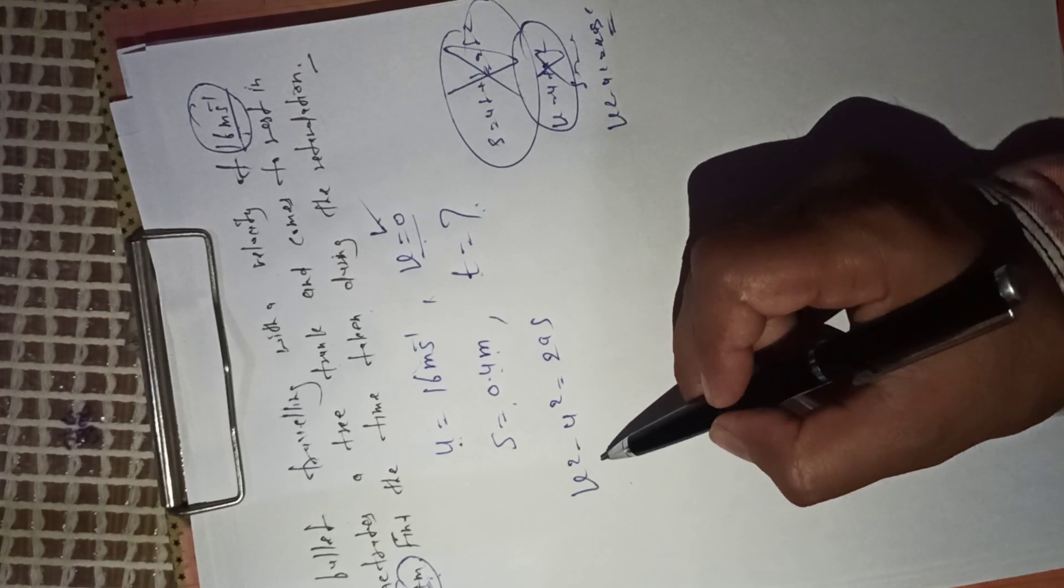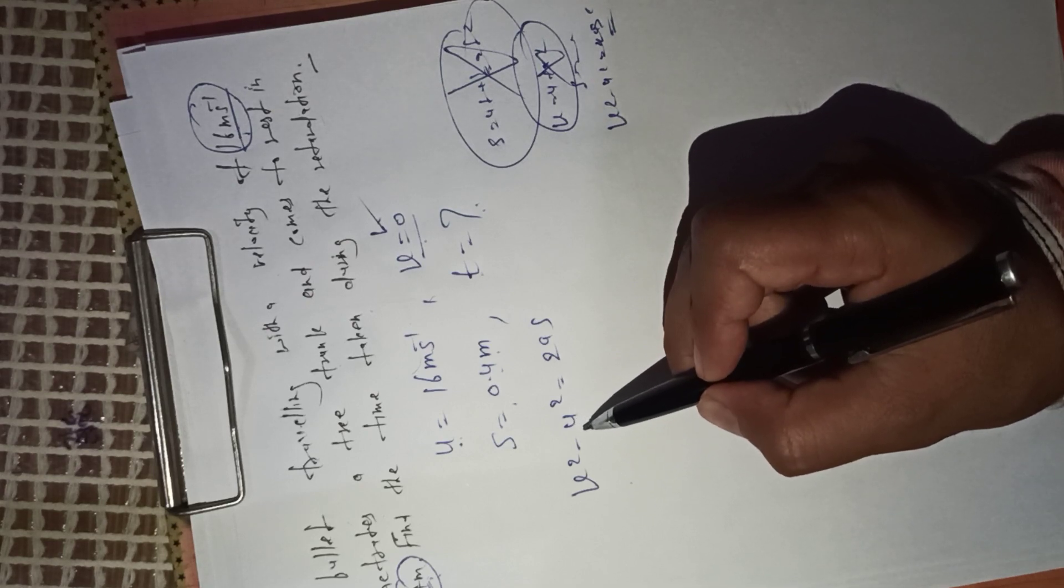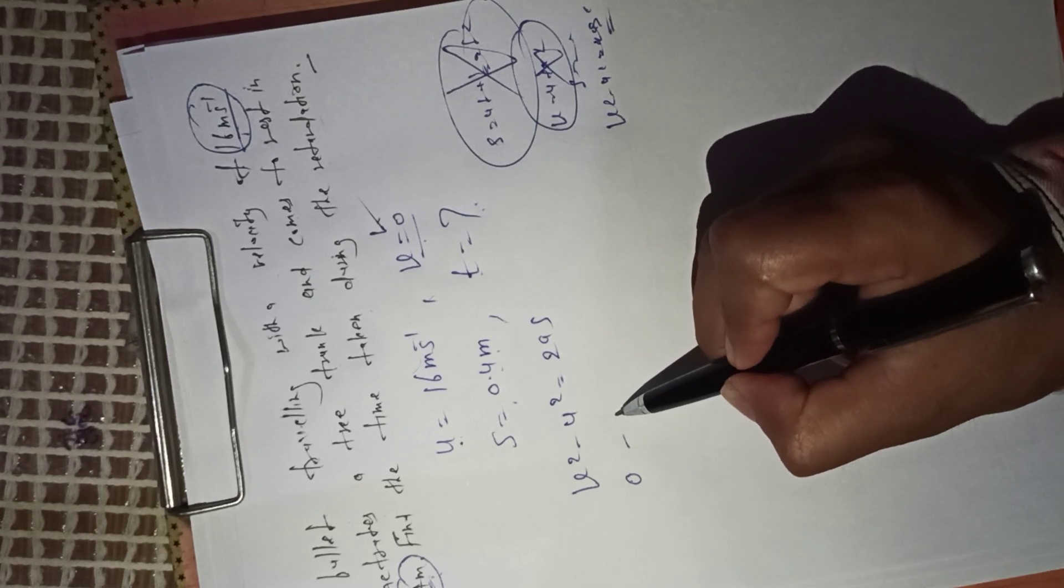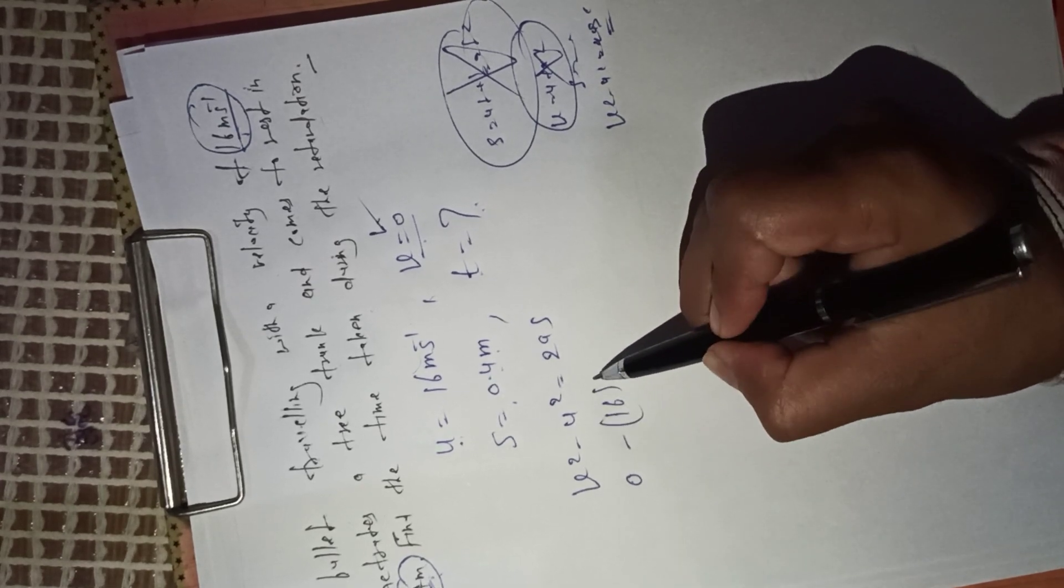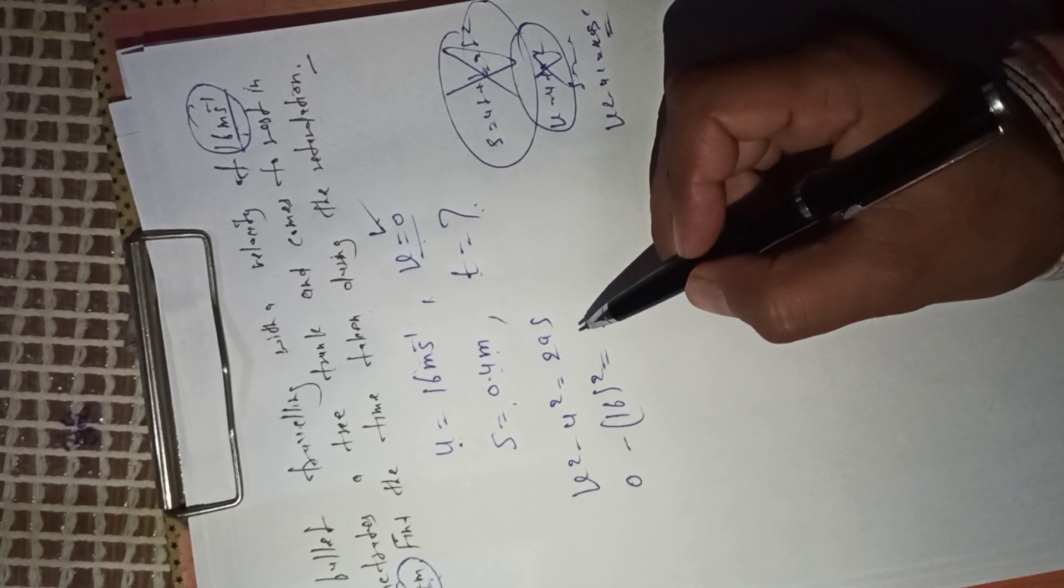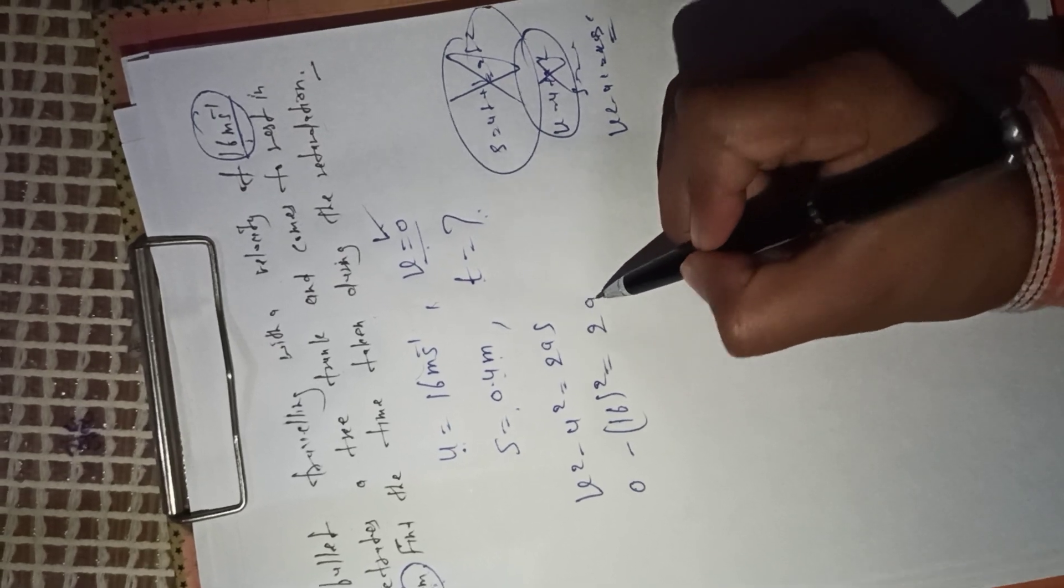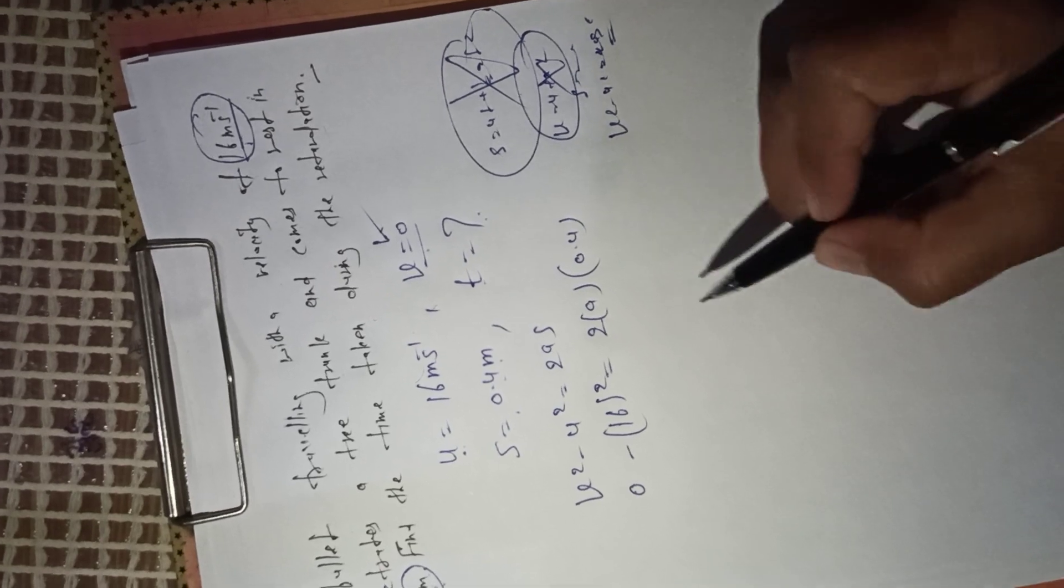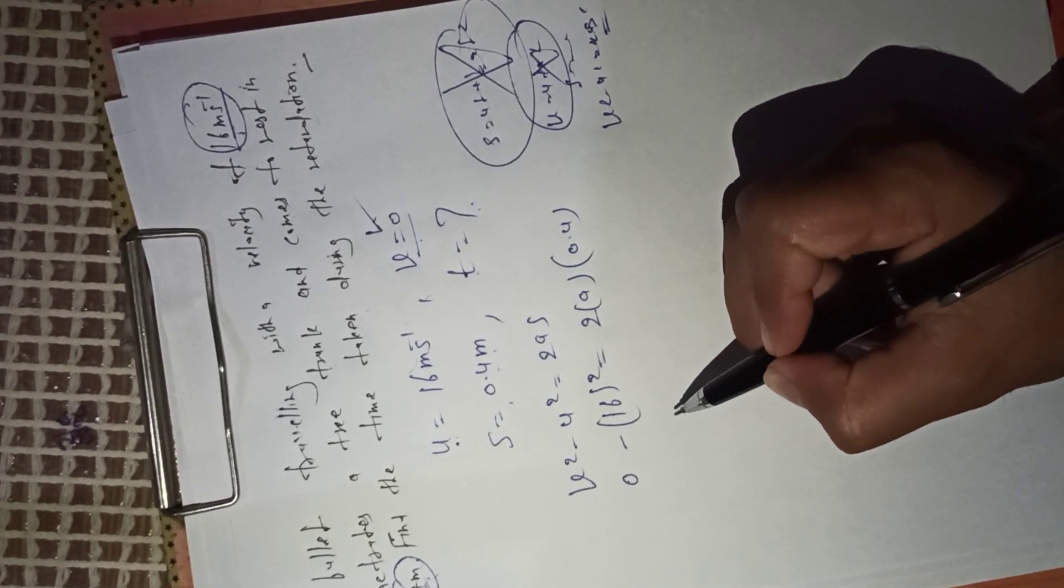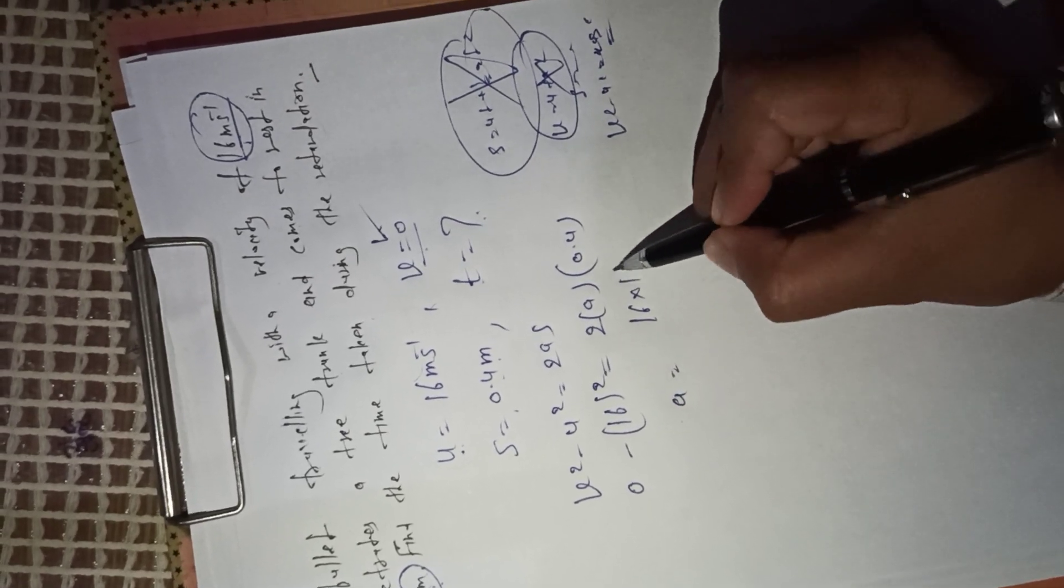What is the value of v? v is 0, u is given as 16. Using v² = u² + 2as, a is not given but you can find the value of a. The value of s is 0.4. You can calculate: 16² = 256, so a equals 16 into 16 upon...